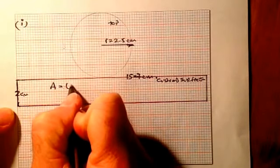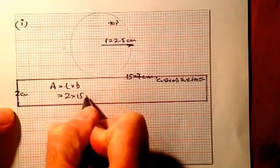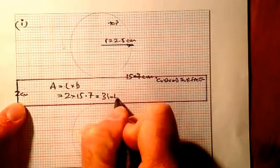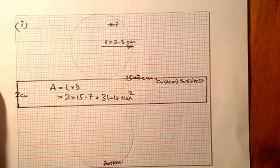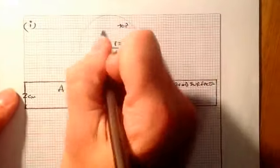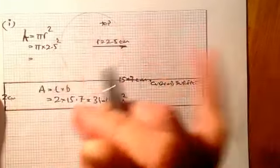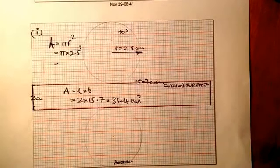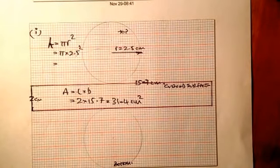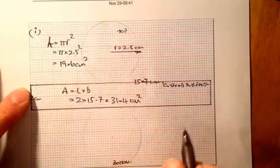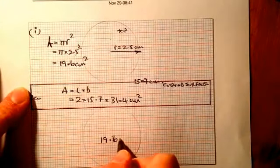The height is two centimetres. Area of the rectangle: length times breadth — two times 15.7 — gives me 31.4 centimetres squared for the rectangle. For each of the circles, the area equals pi r squared: pi times 2.5 squared gives me 19.6 centimetres squared to one decimal place. The other circle is also 19.6 centimetres squared.